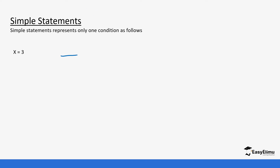Let's draw a number line. You can start that number line at any number as long as the numbers that we require are there. We have the negative side as well. We talked about the number line in form 1 lessons; you can go back and check that.